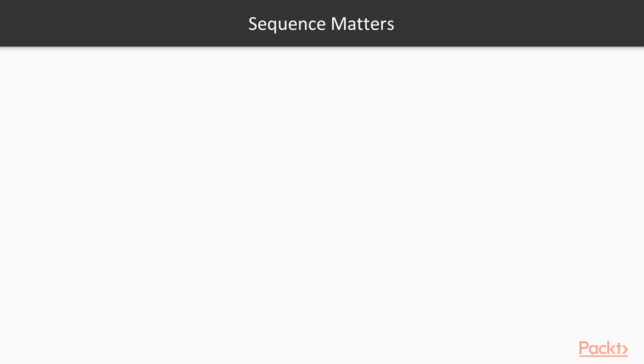RNNs are used where sequence is required. For example, in the previous section we talked about image recognition. When you're trying to classify or detect an image or object, the sequence doesn't really matter. But there are situations where the sequence does matter.